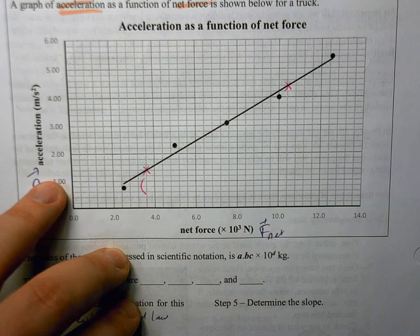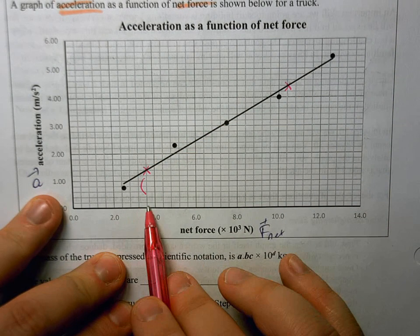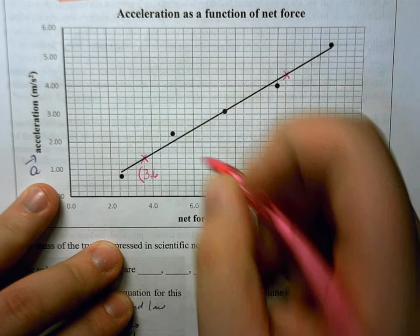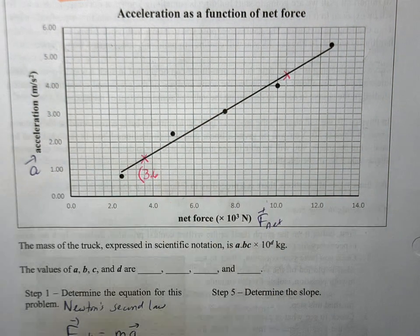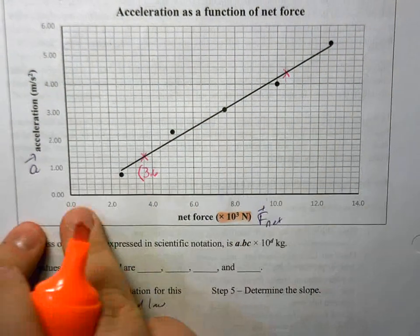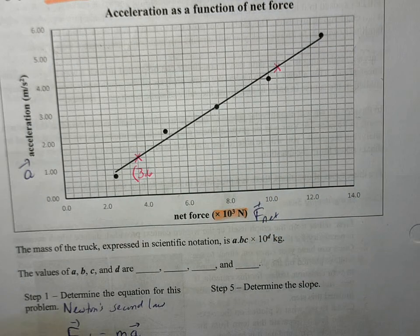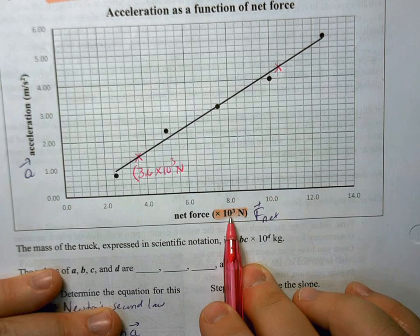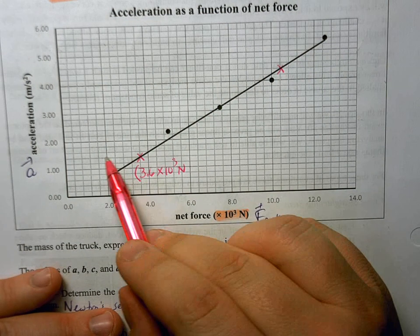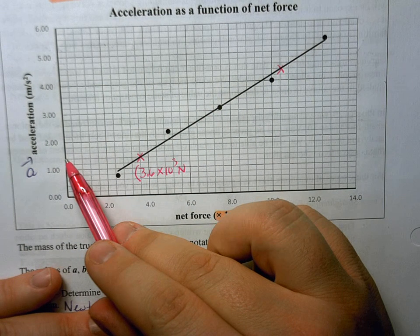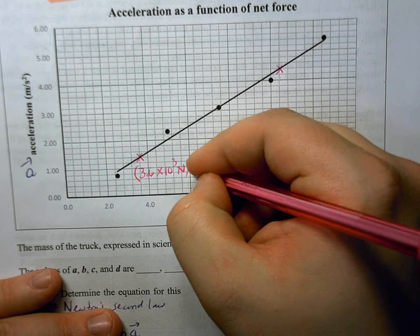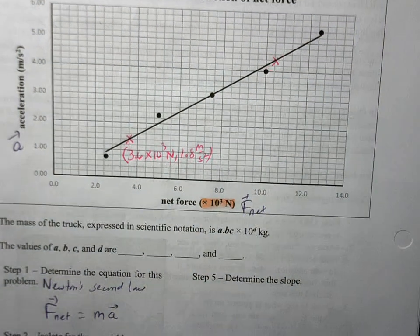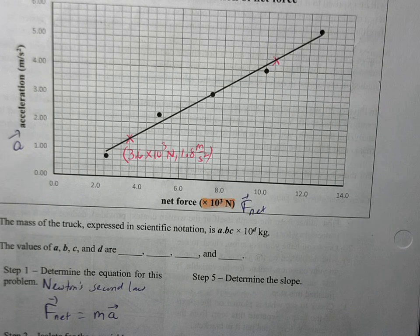What I like to do is label the points, the x and y values. So this point here, based on our scale, is going to be 3.6. Notice that multiplier here though. All of these values are multiplied by 10 to the 3. That's a big mistake that students make with these questions. They forget those multipliers. And then on my y-axis here, I'm going to have about 1.8 meters per second squared. I also like to have the units. That certainly helps me in the end here.